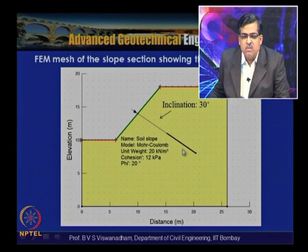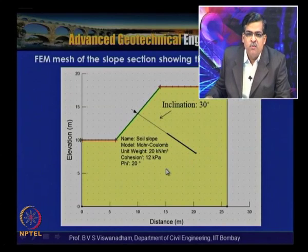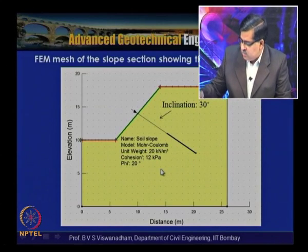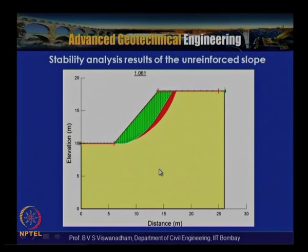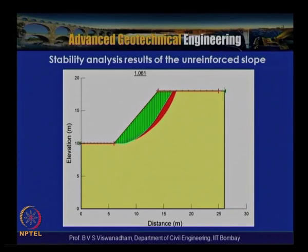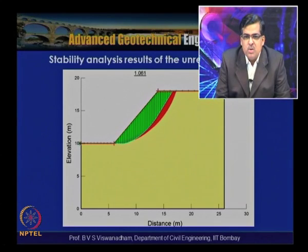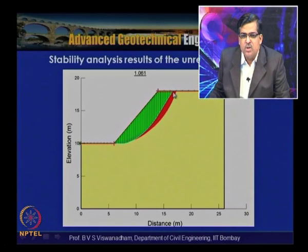The analysis was done for comparison purposes with and without anchor. Stability analysis results of the unreinforced slope show that the least factor of safety obtained by Bishop's method is 1.061, and the factor of safety for the potential failure surface is 1.61.